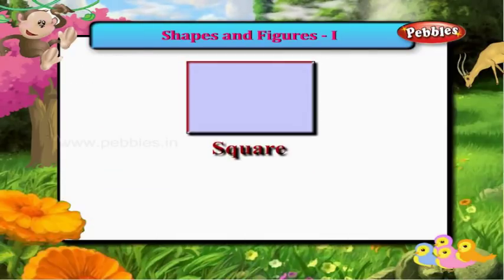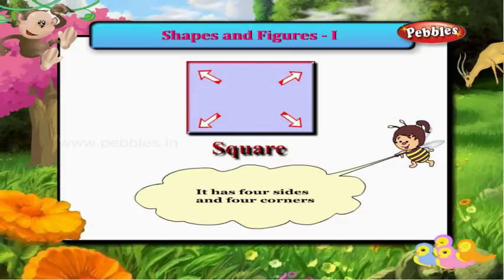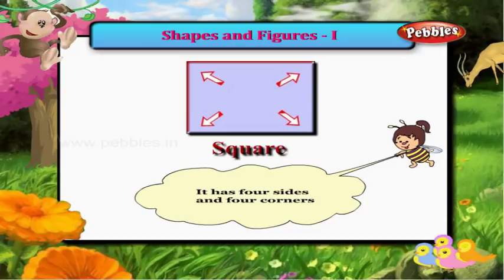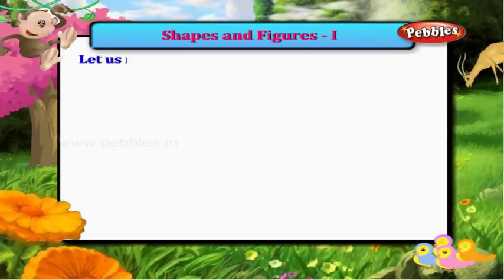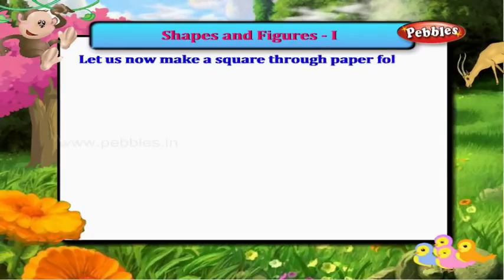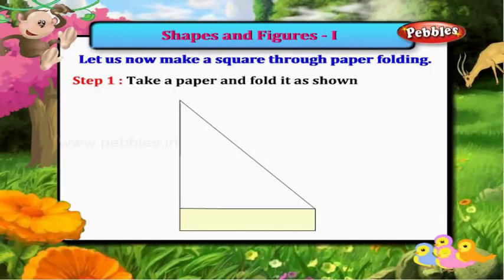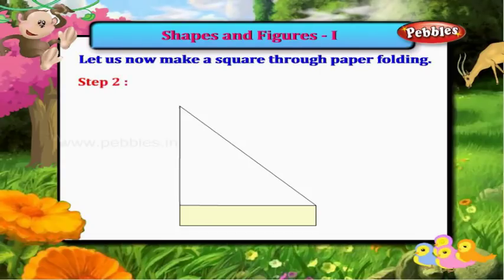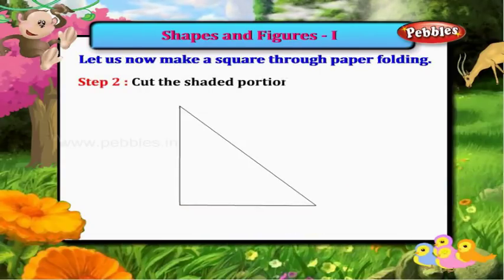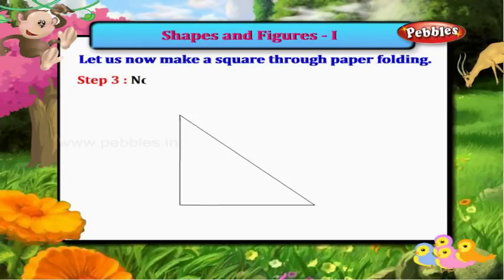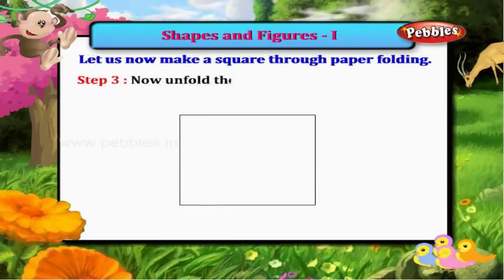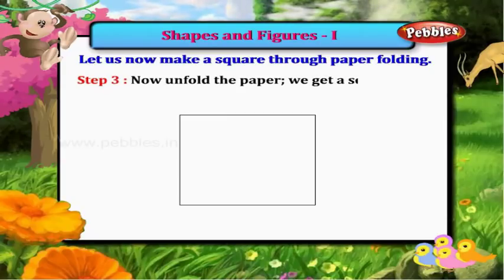This is a square. It has four sides and four corners. Let us now make a square through paper folding. Step one: take a paper and fold it as shown. Step two: cut the shaded portion. Step three: now unfold the paper. Here we get a square.